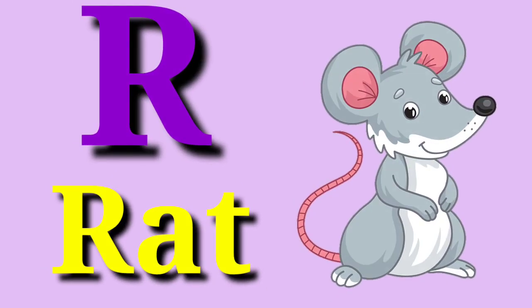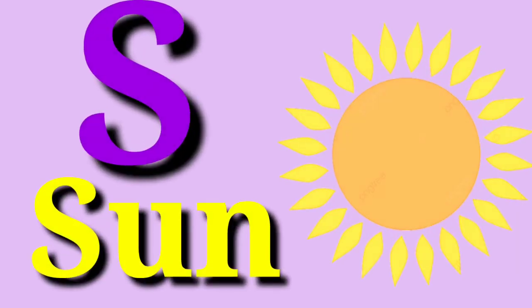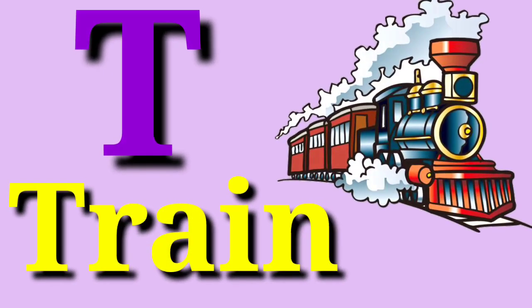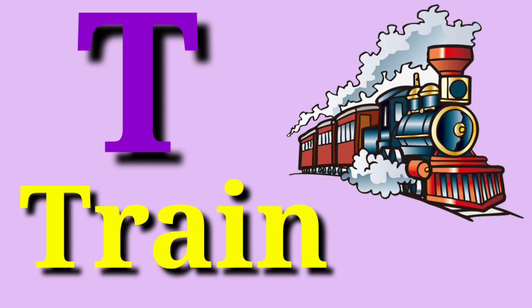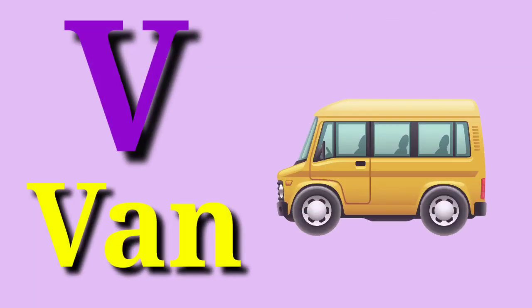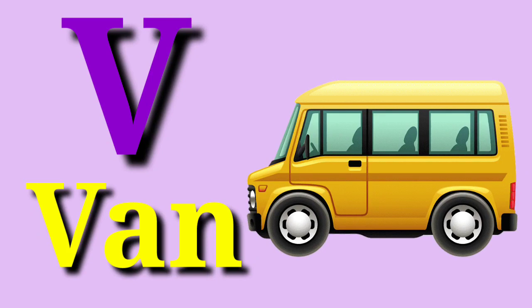R for road. S for sun. T for train. U for umbrella. V for van.